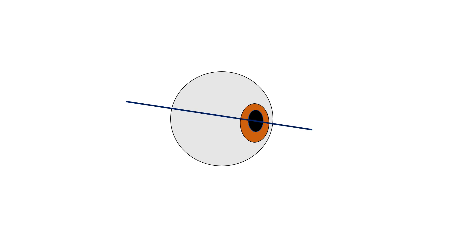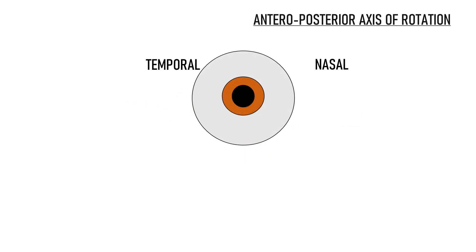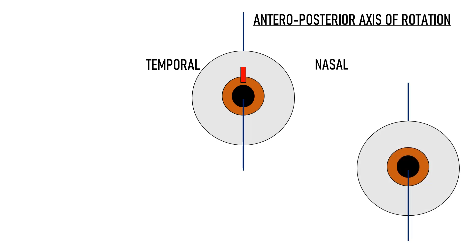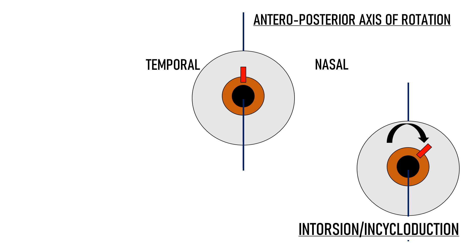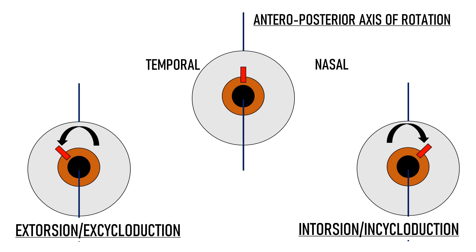When the eye moves along the antero-posterior axis, we get torsional eye movements. This is the antero-posterior axis, and this small red line represents the 12 o'clock position on the cornea. Along this axis, the eye can either rotate nasally — this movement is known as intorsion or in-cycloduction — or rotate in the opposite direction so that the superior pole moves temporally, which is known as extorsion or ex-cycloduction.